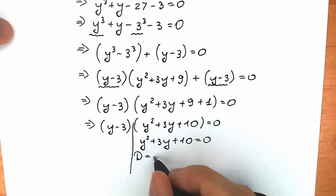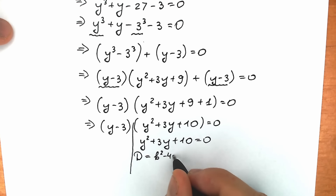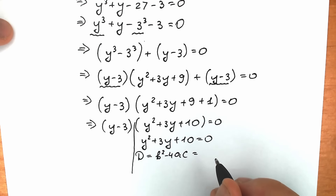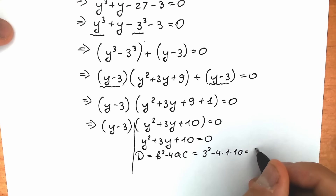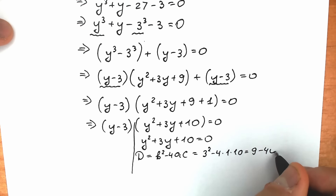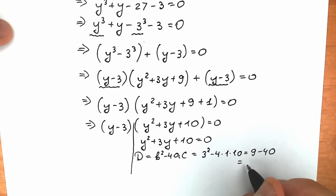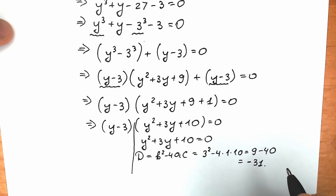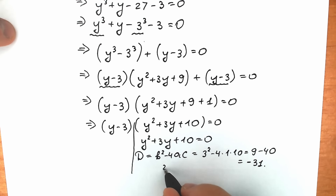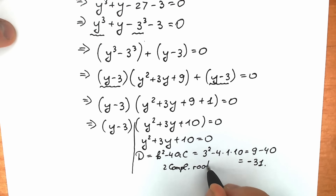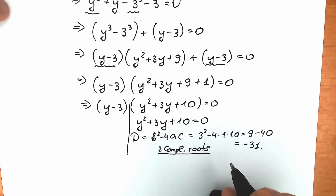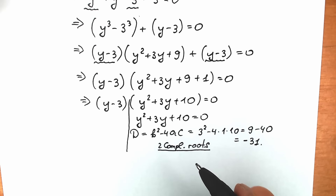The discriminant from school: D equals b squared minus 4ac. As a result, we have 3 squared minus 4 times 1 times 10, which gives us 9 minus 40. This is a really important moment: we get minus 31. So this tells us that we have two complex roots here, because the discriminant is negative — when we plug in this negative discriminant, we get the complex unit i.